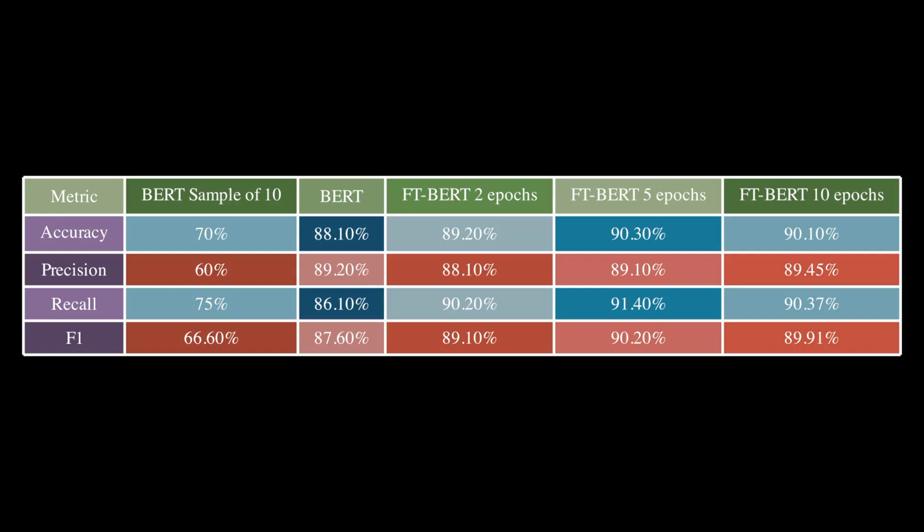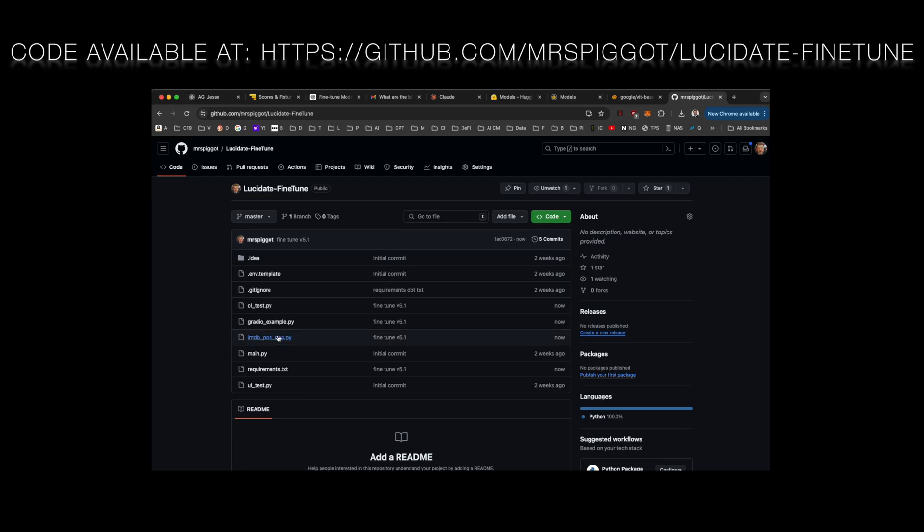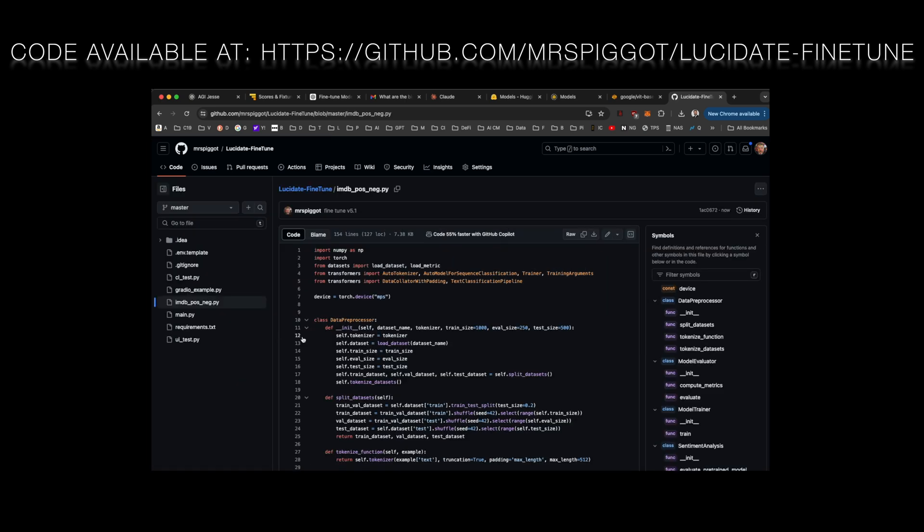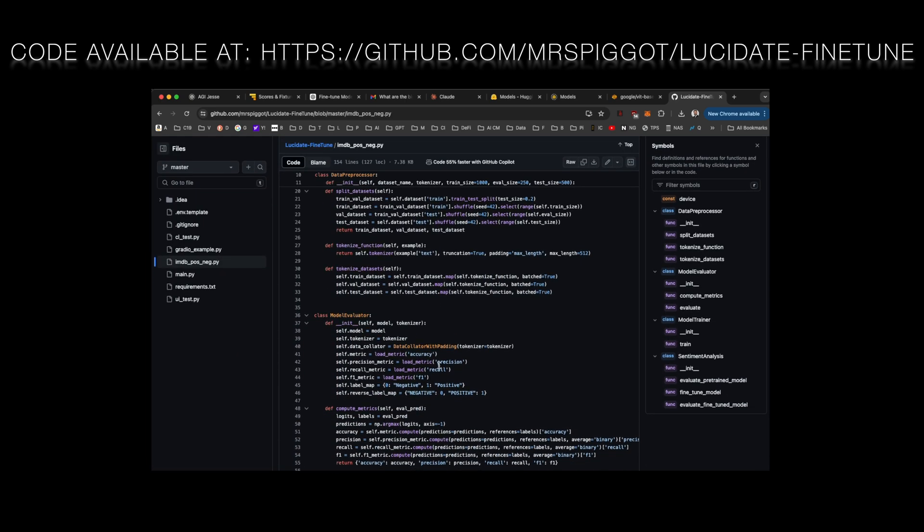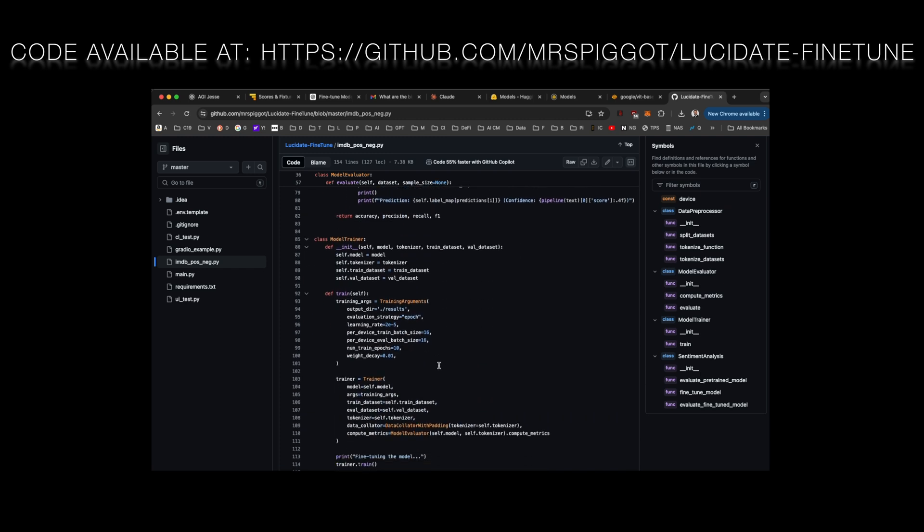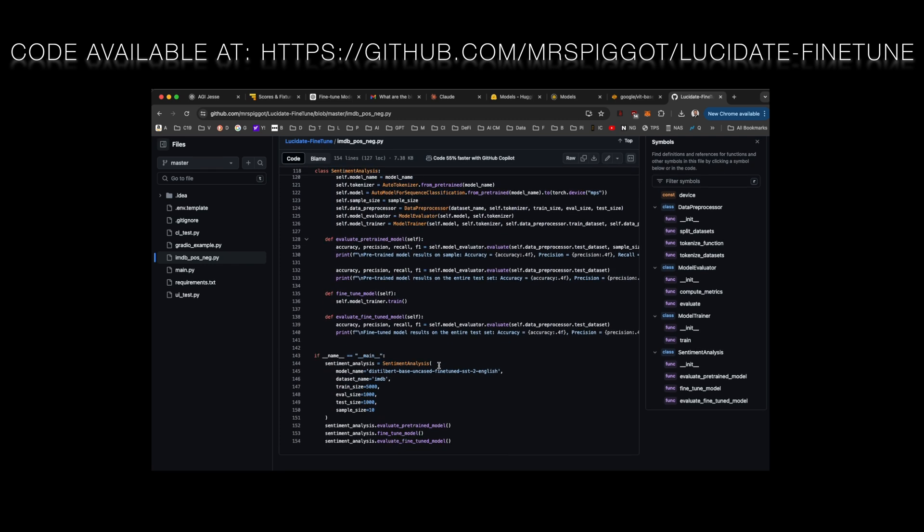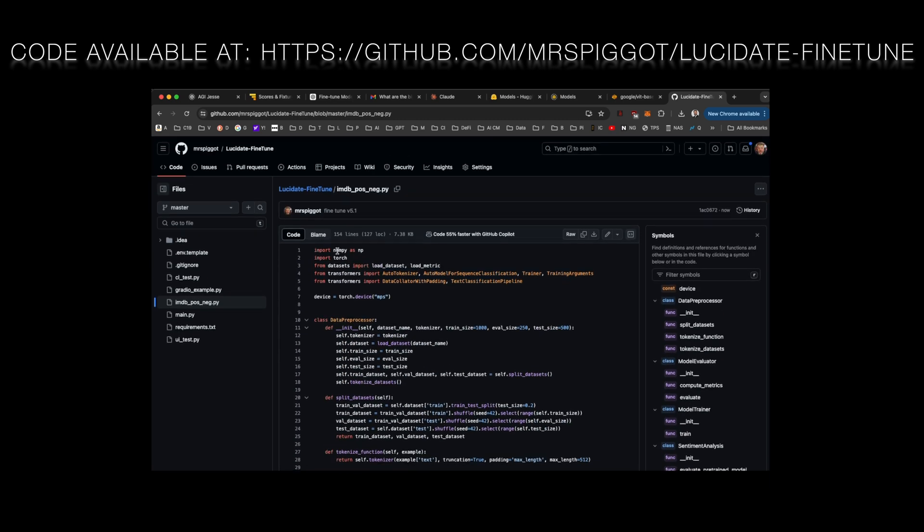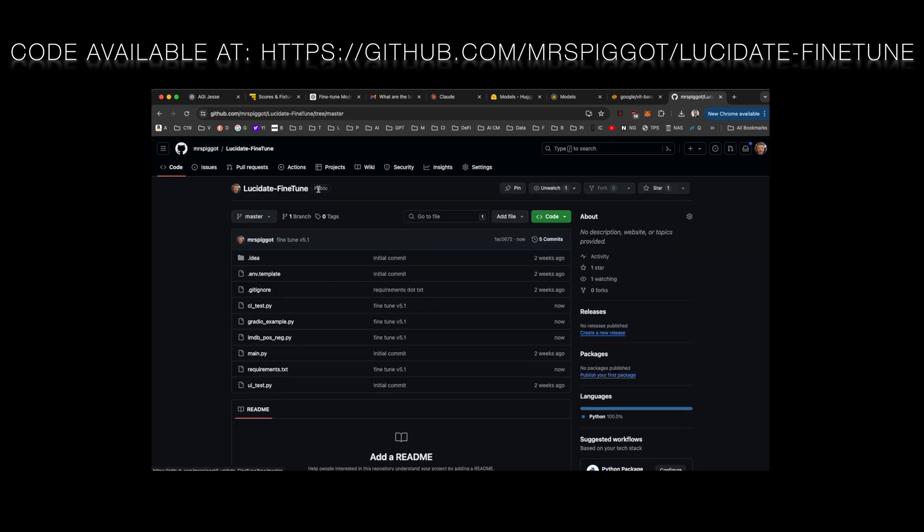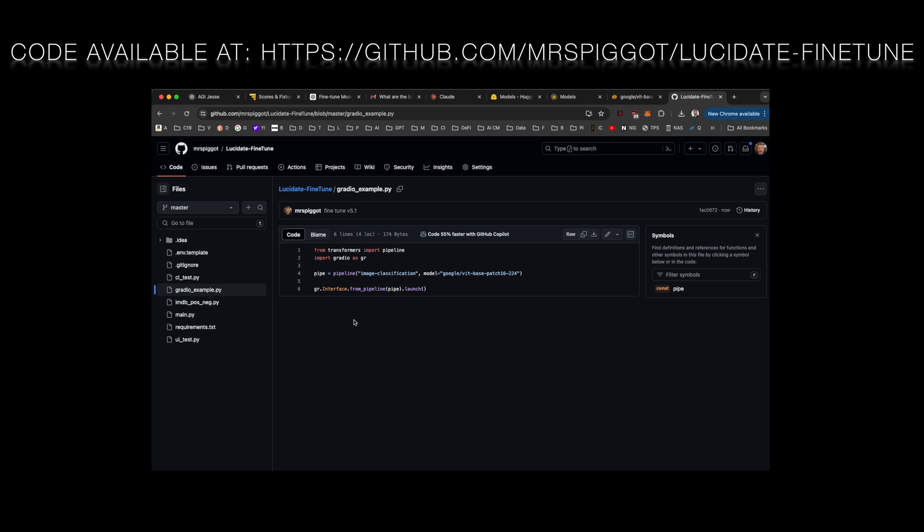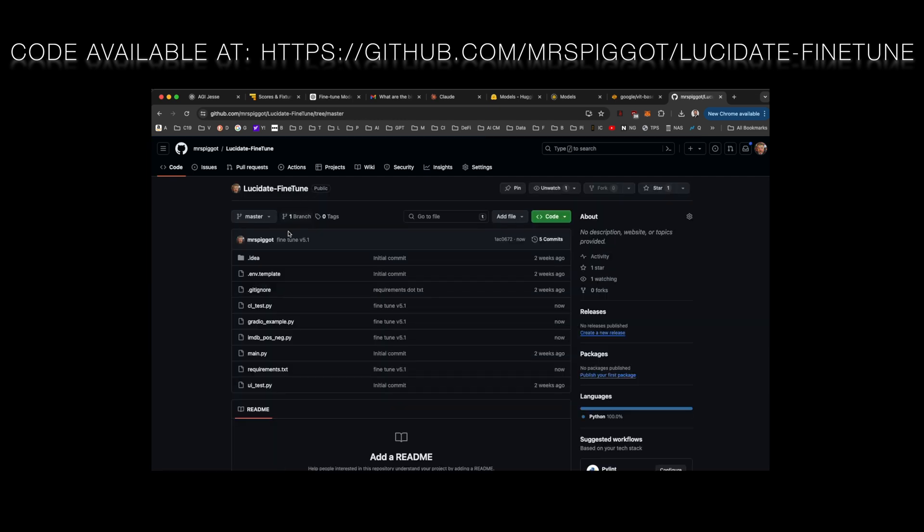Now it's your turn to experiment. Download the code. The full source code for this tutorial is available in a GitHub repo. Don't be afraid to tinker, tweak the parameters and see how you can push the performance even further. Explore different tasks. Sentiment analysis is just the tip of the iceberg. Try applying what you've learnt to other NLP tasks. Summarise text, answer questions or even generate creative writing with your fine-tuned models.